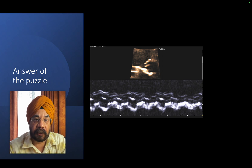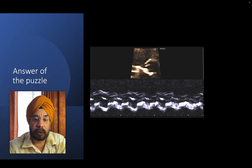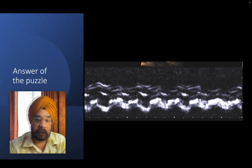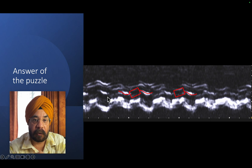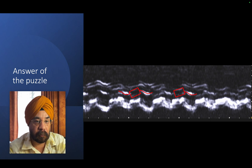We did an M-mode to evaluate the aortic valve. The M-mode of the aortic valve - the box-like pattern - showed it was opening normally. So the aortic valve was opening okay. Where then was the problem?